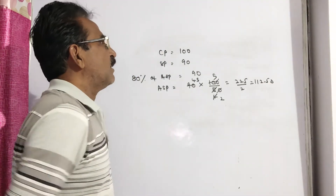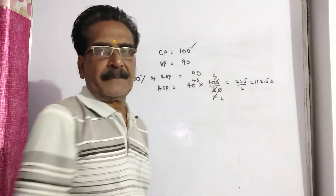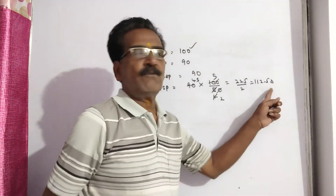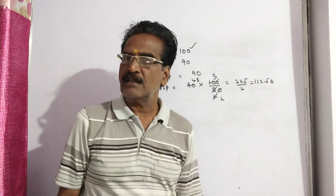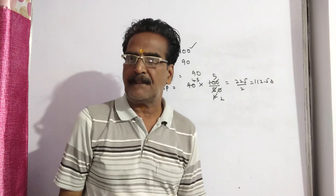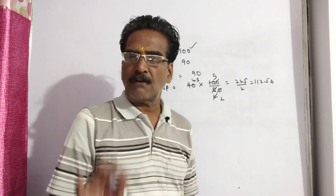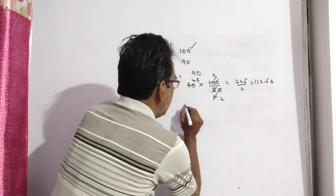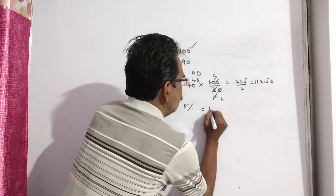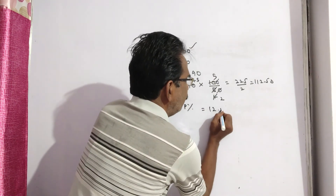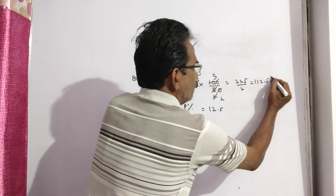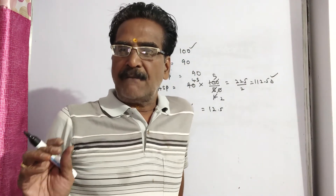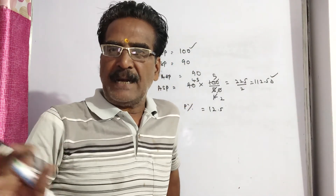Friends, when cost price is 100, sold price is 112.50. That means profit percent is 12.5%. So, profit percent is equal to 12.5.